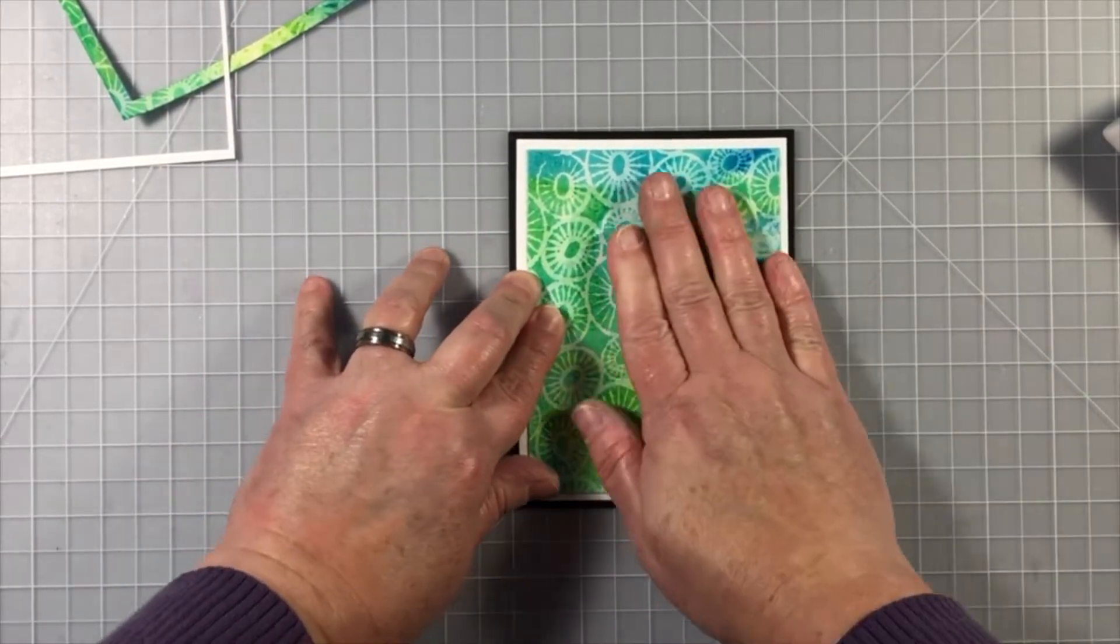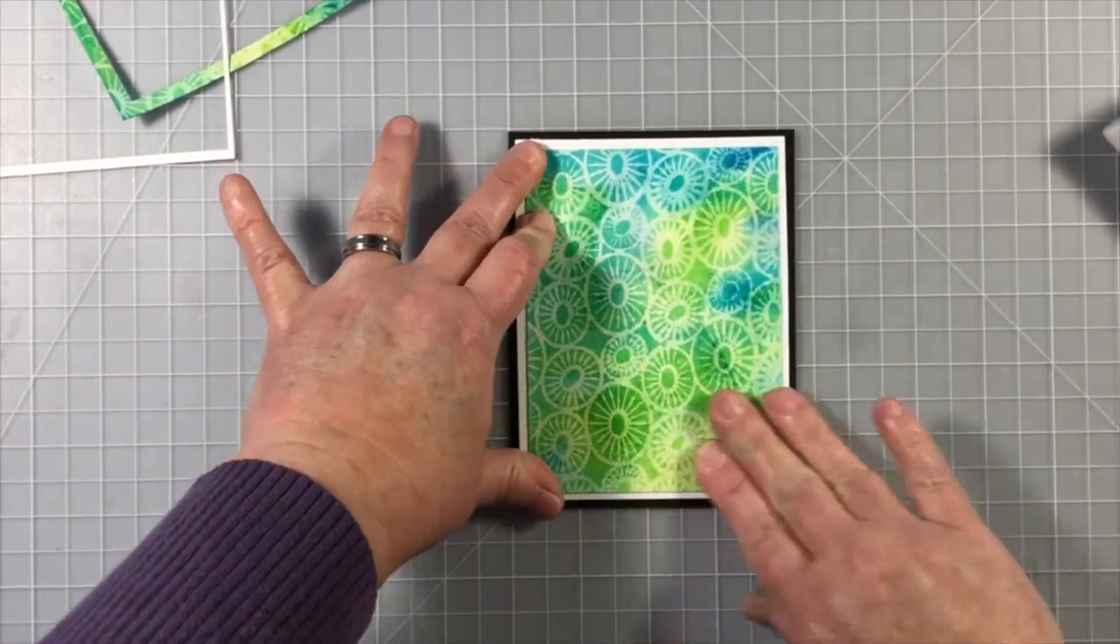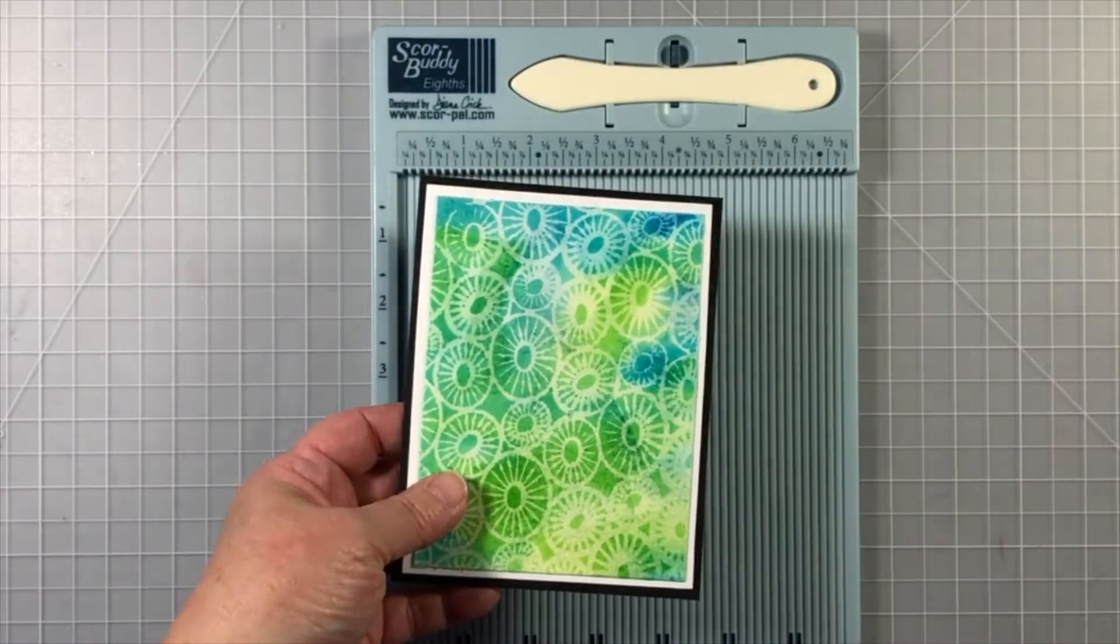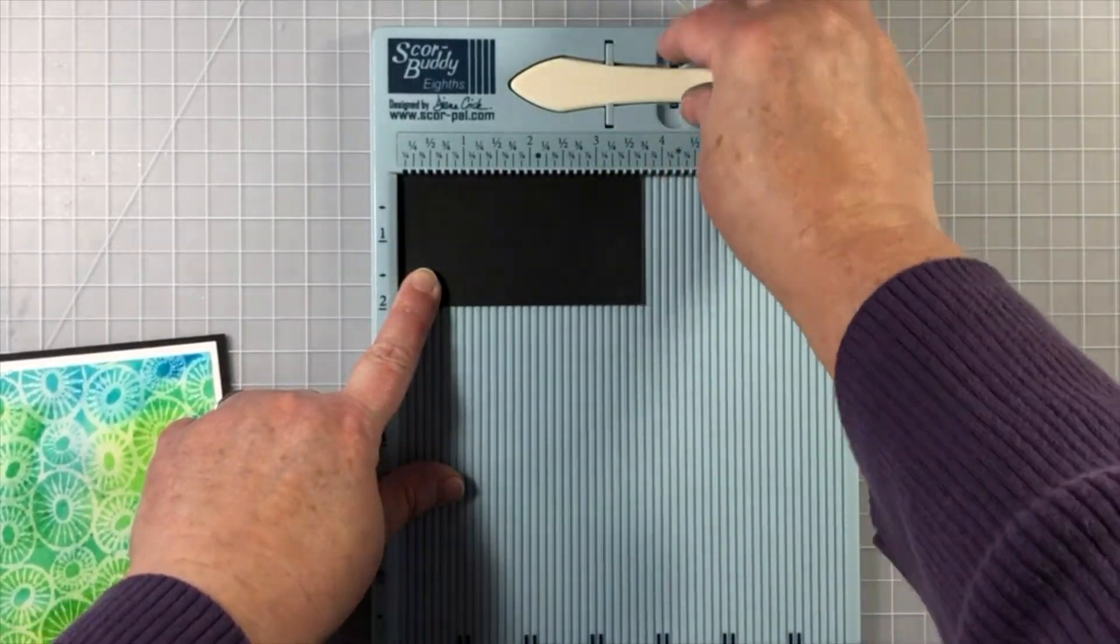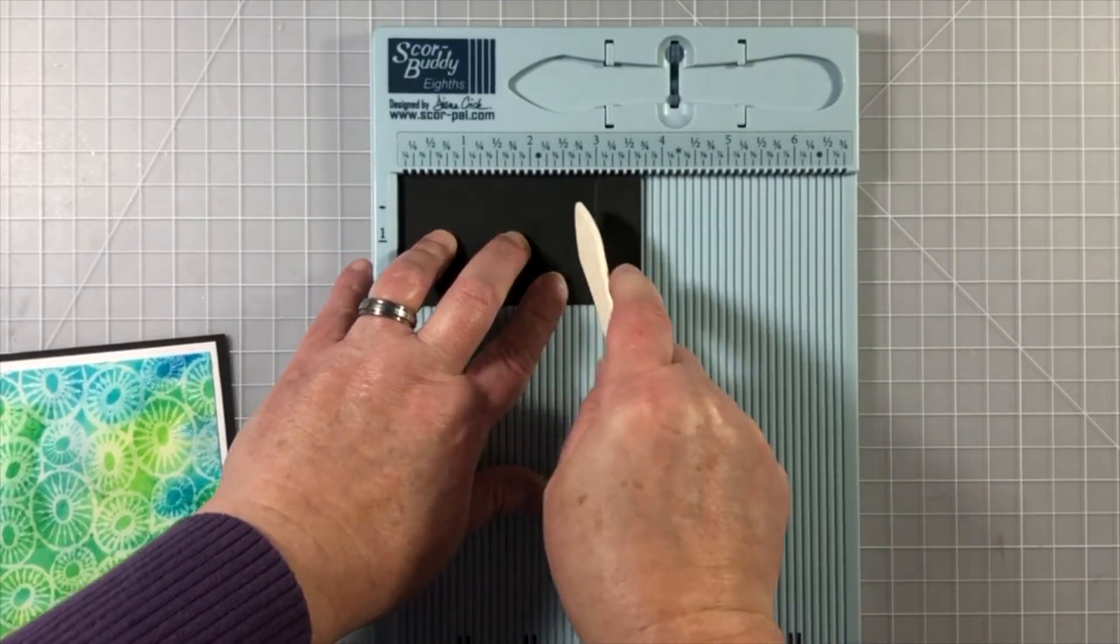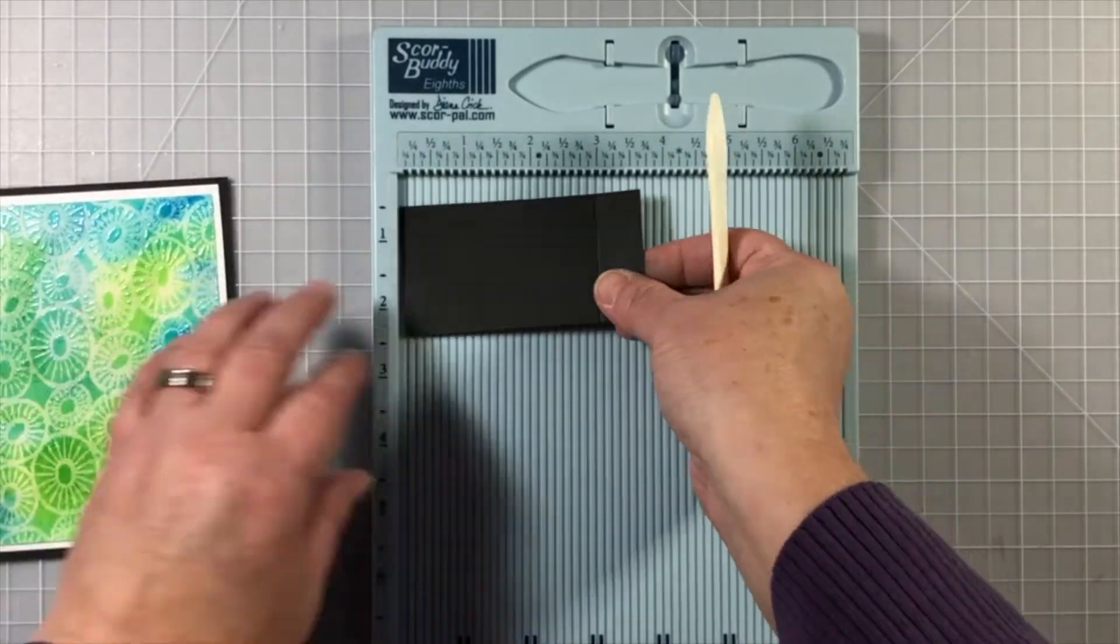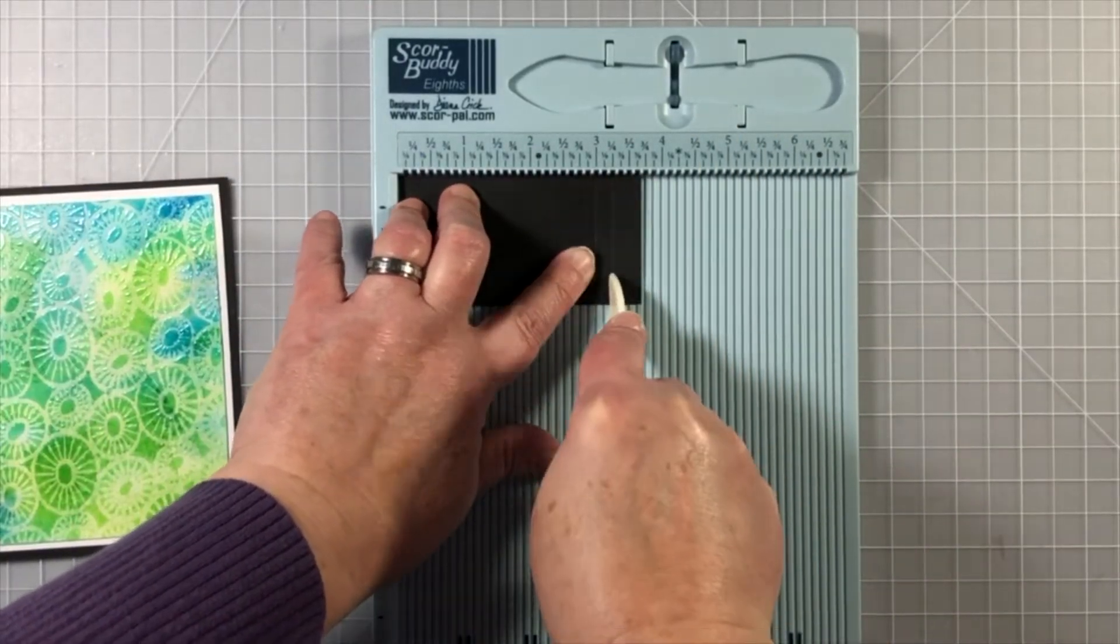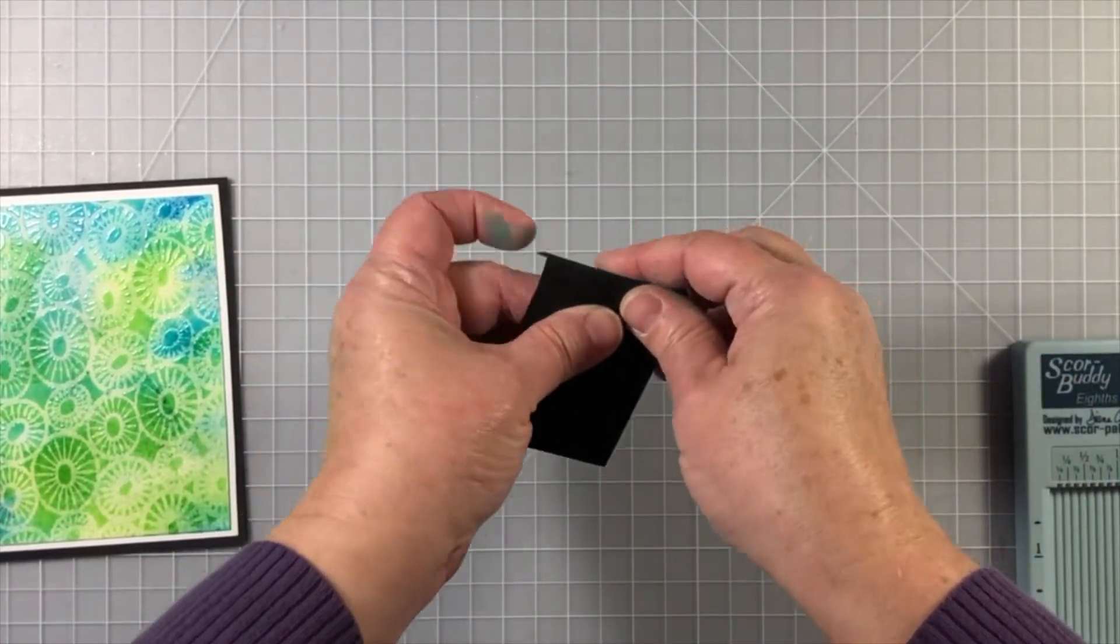So I'm using some liquid glue to adhere this panel down to a side folding A2 card base. I wasn't really sure at this point how I was going to attach our images and the sentiment, but I had like an aha moment. You know we all get those in the middle of crafting, and I decided to change the way I was going to do the card.